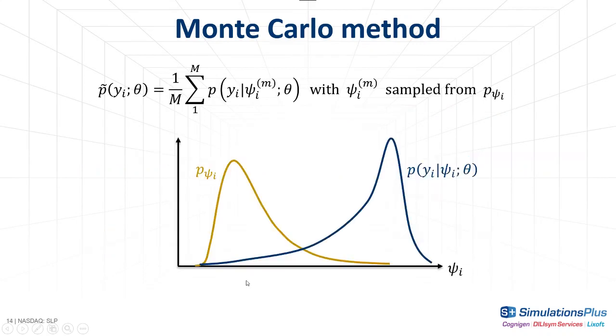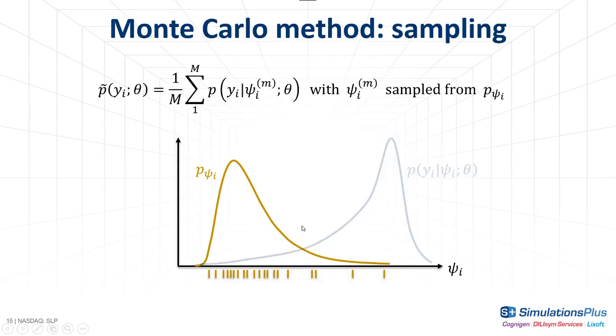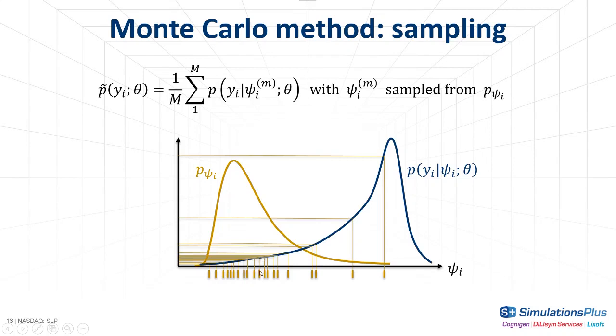Let's see how this works in practice. Here I have plotted an example of the probability density function p(ψ) and the pdf p(y|ψ). The first step is to sample values from the probability density function of ψ. I have shown the values here at the bottom. Most of the values will be concentrated in the region where p(ψ) is high, here. Then, for all samples, we calculate the value of p(y|ψ) and we collect these values on this axis here. And finally, we do the average of all these values and this is an estimate of the likelihood for individual i.